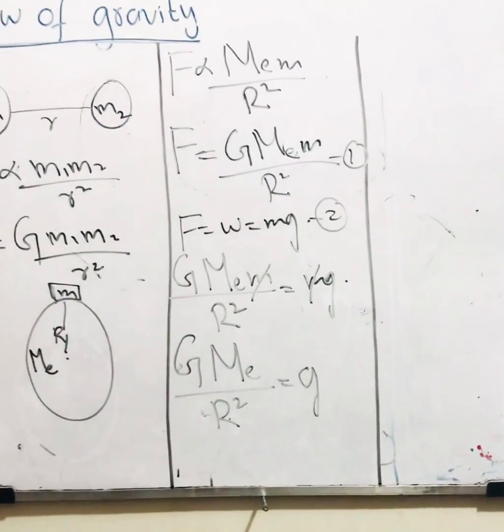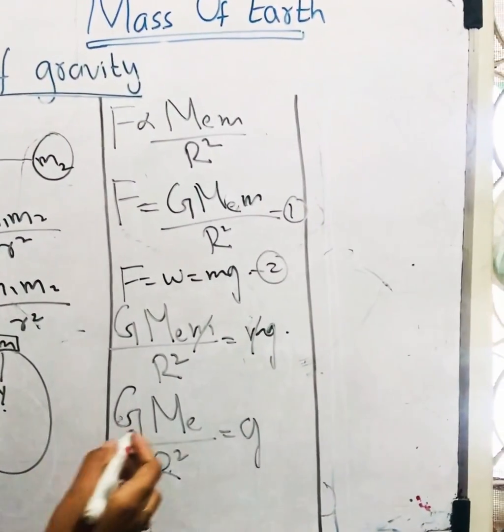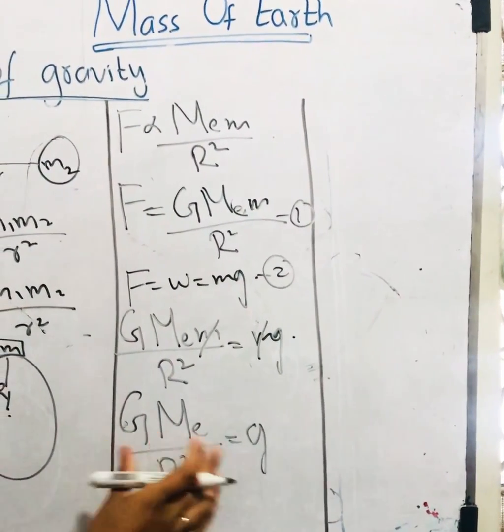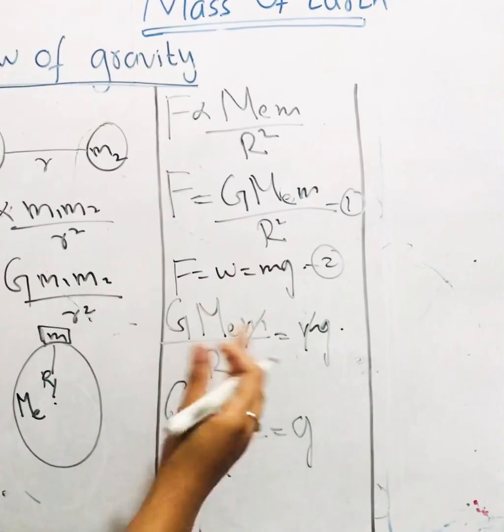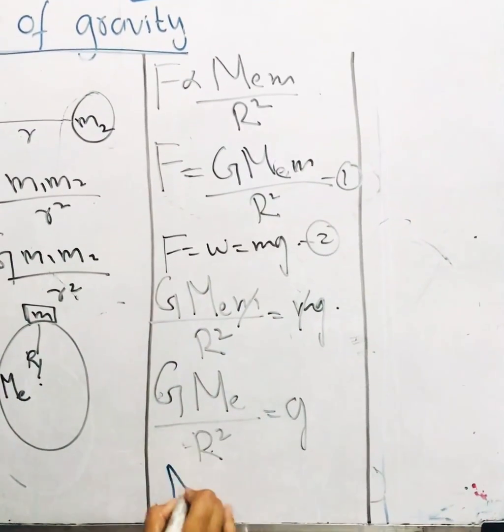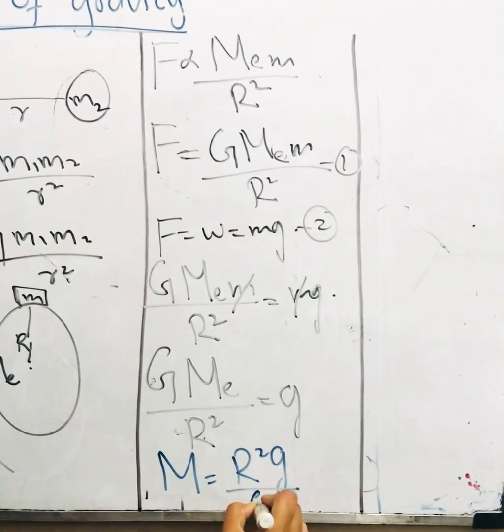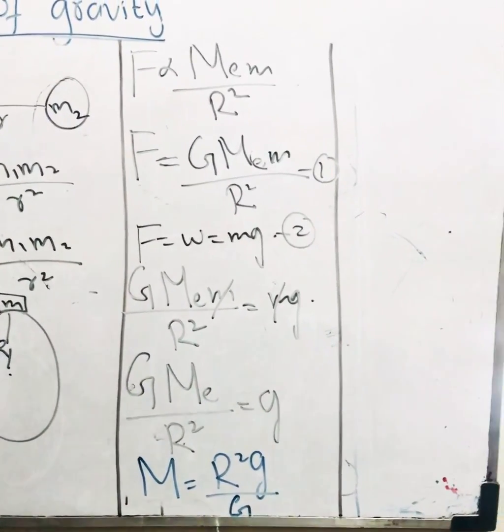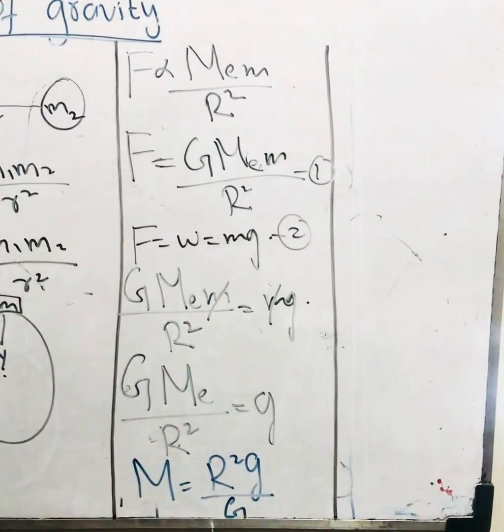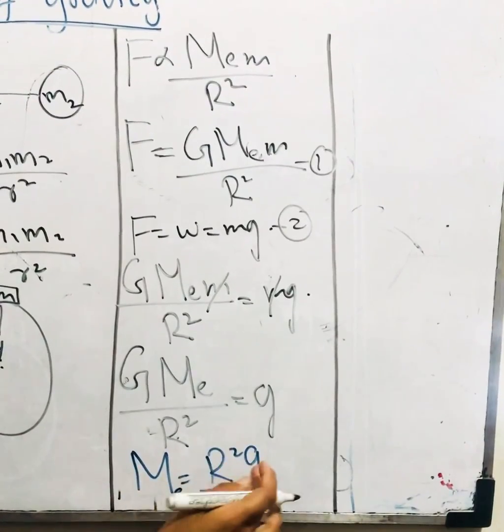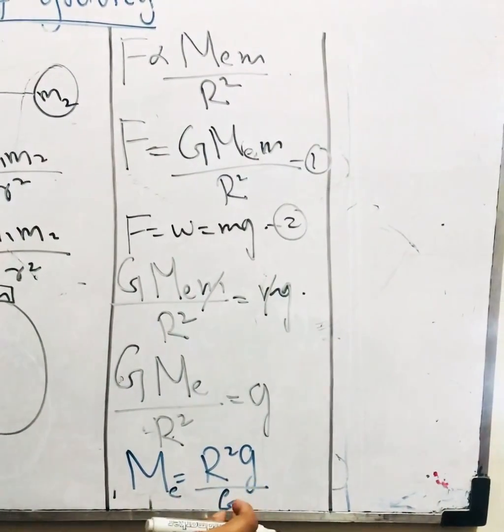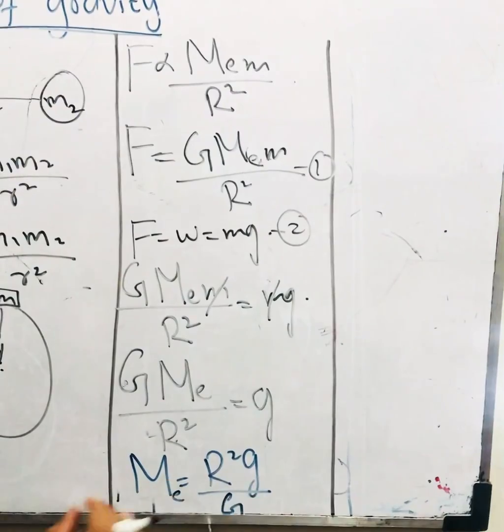My demand is capital M, I mean mass of Earth. For this I have to arrange my equation according to my demand. I can write M is equal to r square multiplied with g divided by capital G. It means mass is directly proportional to radius of Earth, acceleration due to gravity and inversely proportional to capital G.